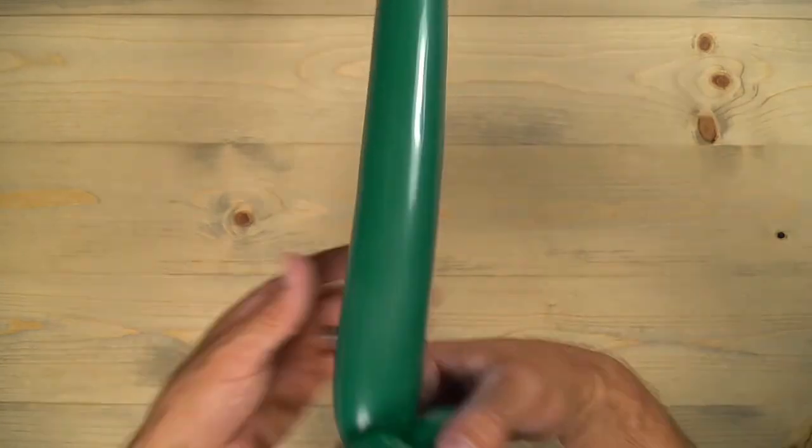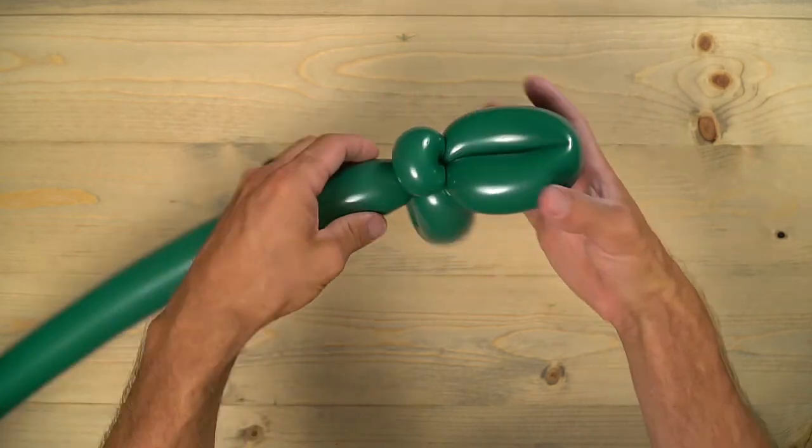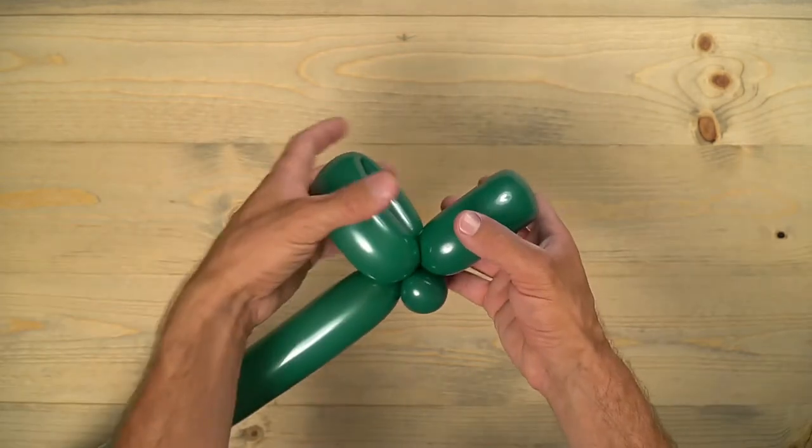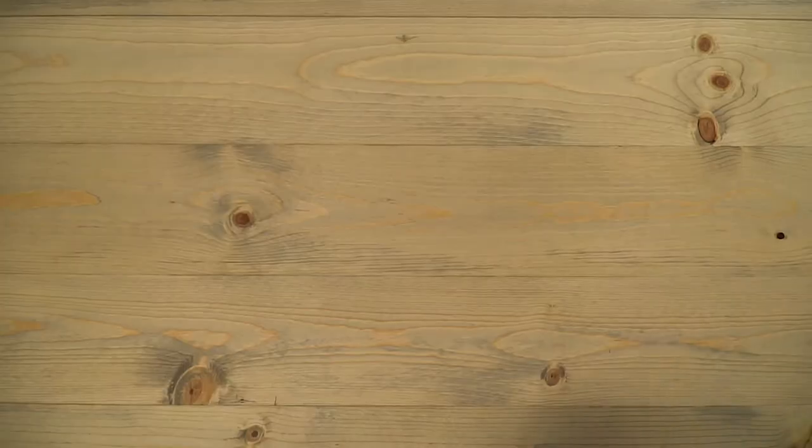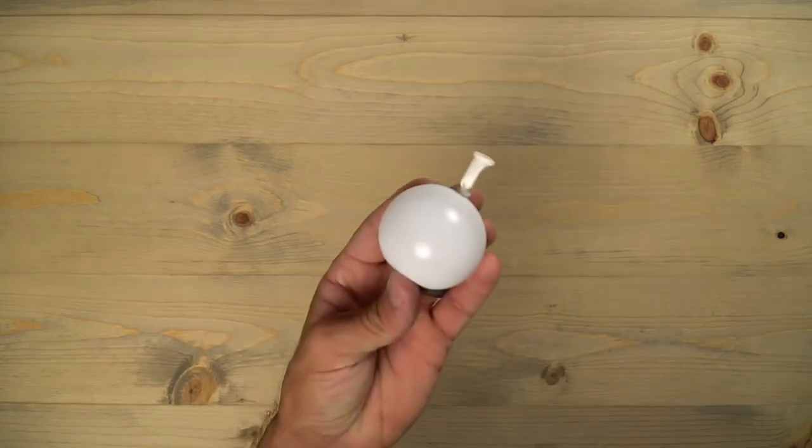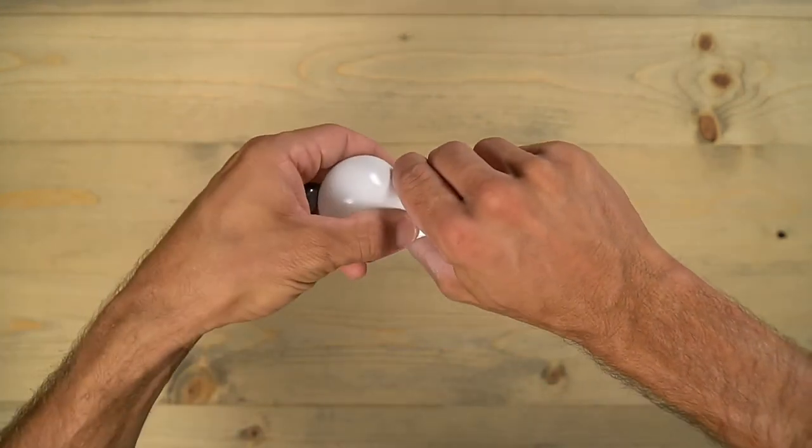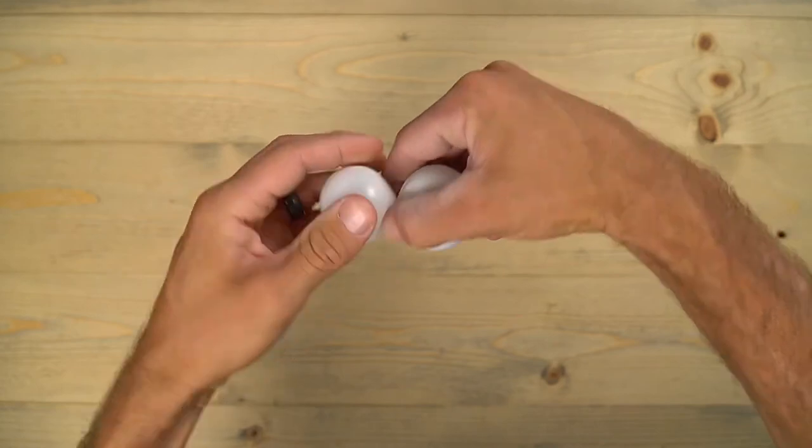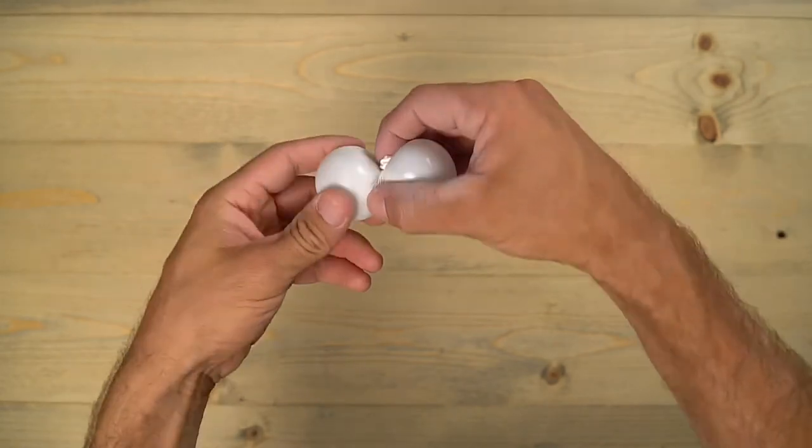Those two loop twists are going to be right on top of each other for the mouth. Now we're going to take those eyes—really it's just that one five-inch white round that we're going to twist in half. Twist that in so it's nice and even on both sides, and then wrap that nozzle around to lock it in.